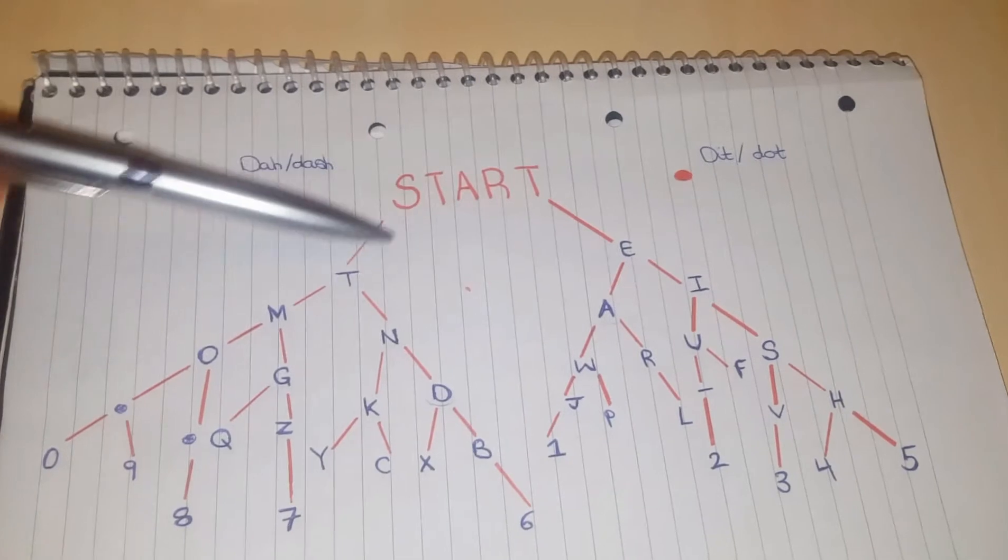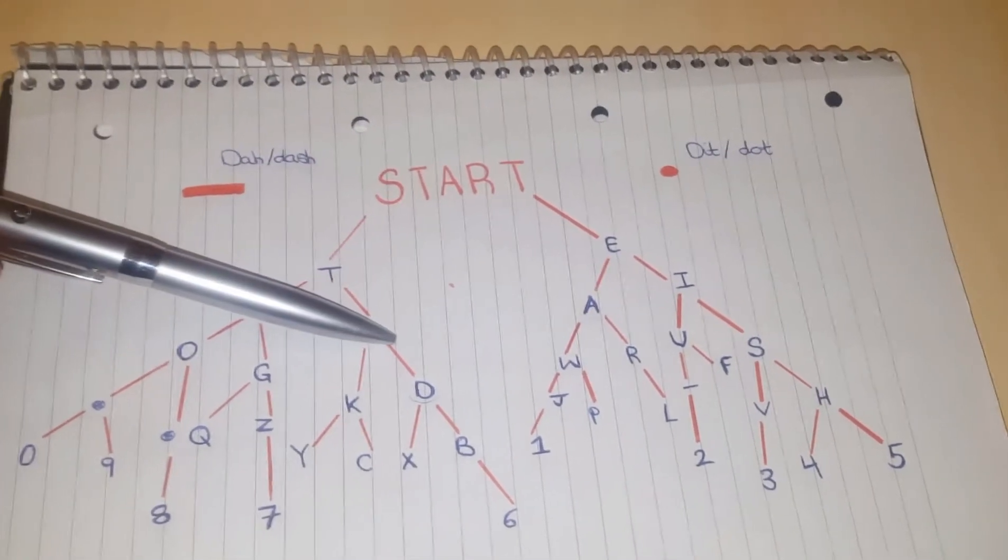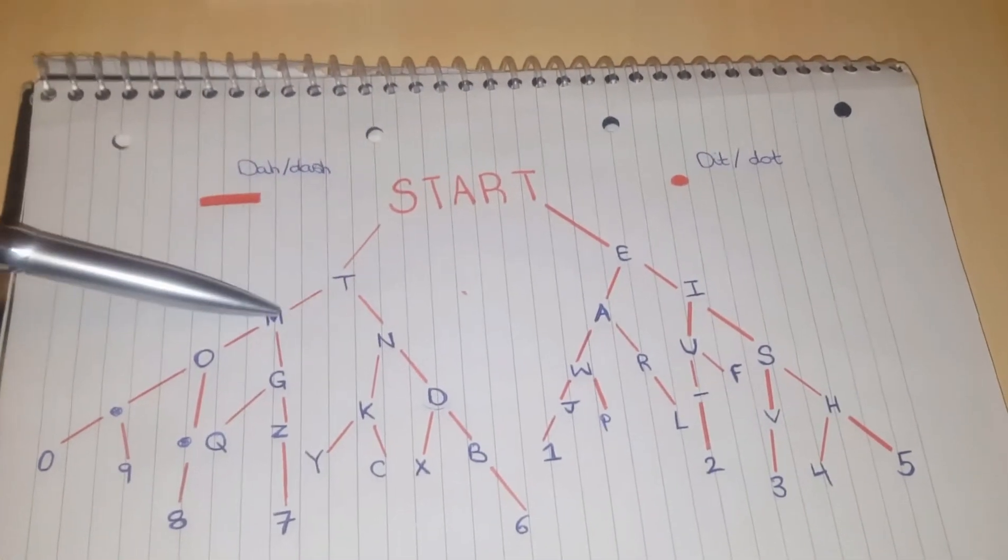So, for N, you go dash dot. For O, you go dash dash dash.